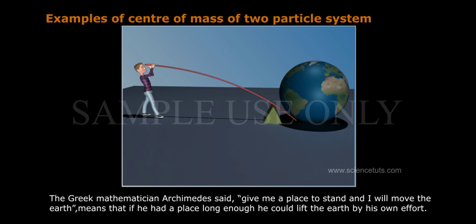The Greek mathematician Archimedes said, 'Give me a place to stand and I will move the earth,' meaning that if he had a lever long enough, he could lift the earth by his own effort.